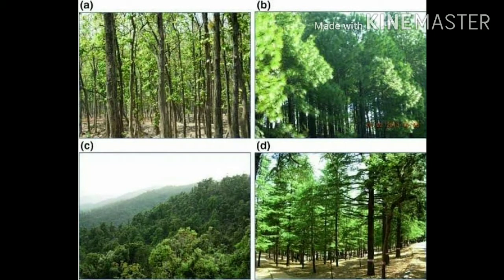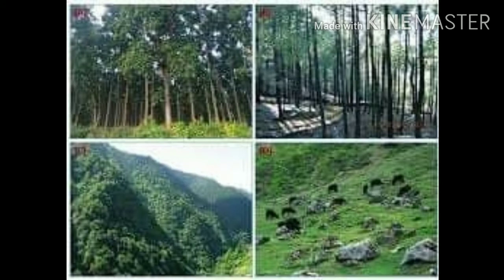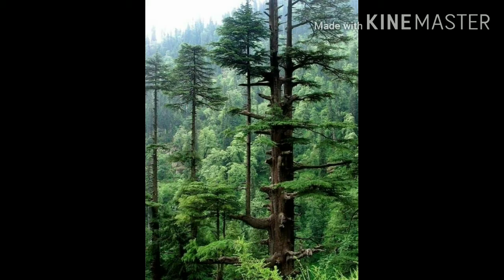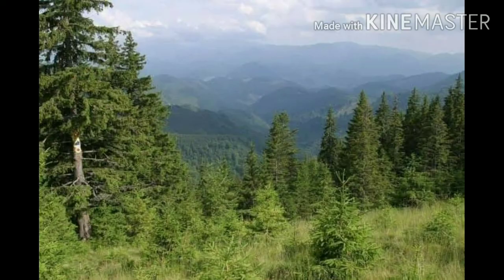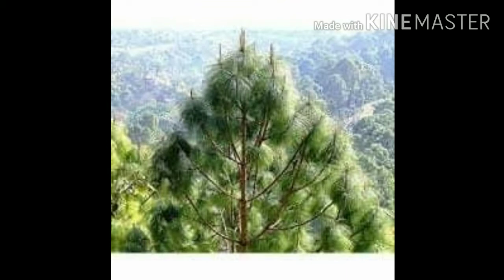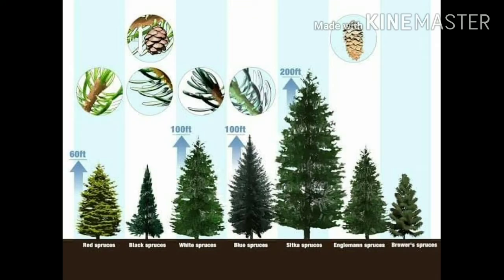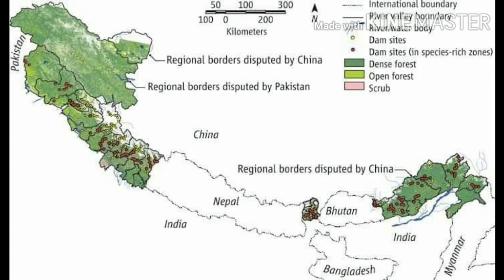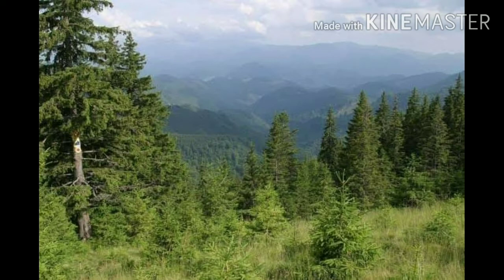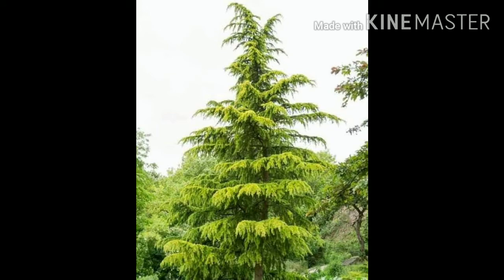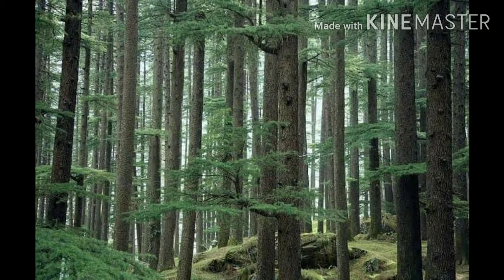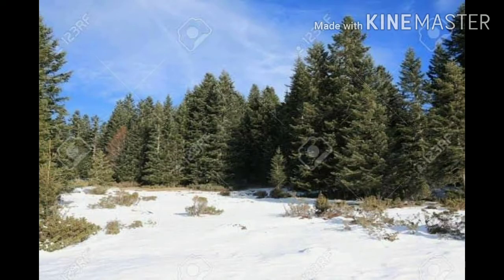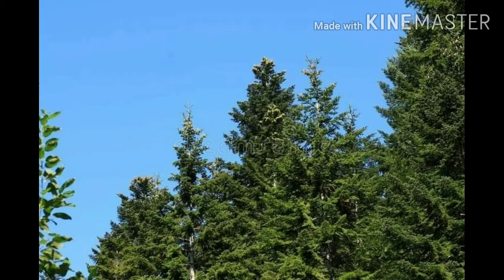Temperate forest at a height of 1500 to 3000 meters are full of coniferous trees that include cedar, spruce, pine, deodar, and silver fir. Temperate forests occur on the southern slopes of the Himalayas and at high altitudes in southern and northeast India. At even higher altitudes, temperate grasslands become a common occurrence.